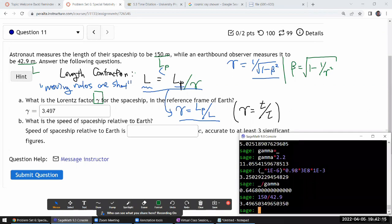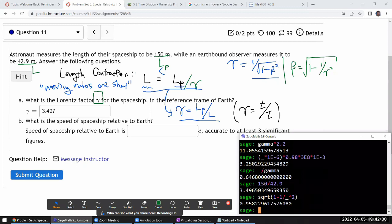My beta, and beta is what I'm looking for because I'm looking for speed in units of C. It's going to be square root of 1 minus 1 divided by, and this previous output is my gamma, previous output squared. Yeah. 0.958. And let's see if it's significant figures. Yeah, 0.958.